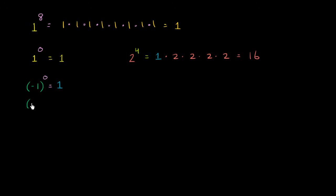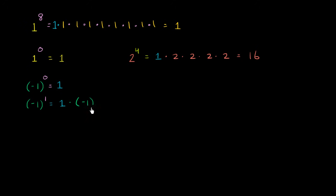Let's try negative 1 to the first power. Using this definition, you start with a 1 and then multiply it by negative 1 one time. And this is, of course, going to be equal to negative 1.